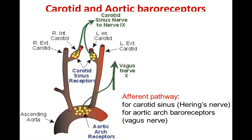Whenever blood pressure increases, the arterial wall will be stretched, so the baroreceptors will be stimulated. Normally there is a continuous stimulation going from the baroreceptors. As soon as there is stretch, the number of impulses going from the baroreceptors will increase and it will be interpreted that the blood pressure has increased. If the blood pressure goes on decreasing below normal, the rate of discharge of impulses decreases and the brain senses that blood pressure is decreasing and necessary action is done.